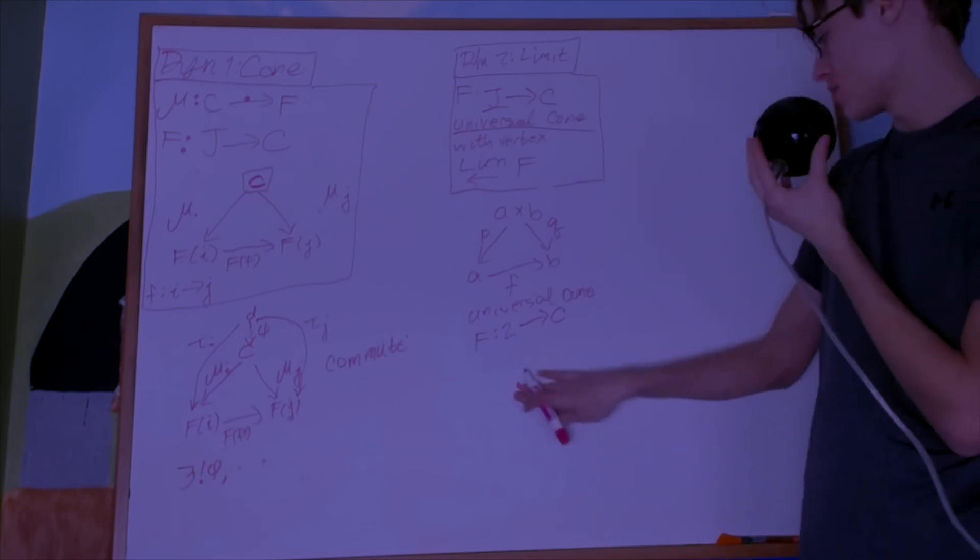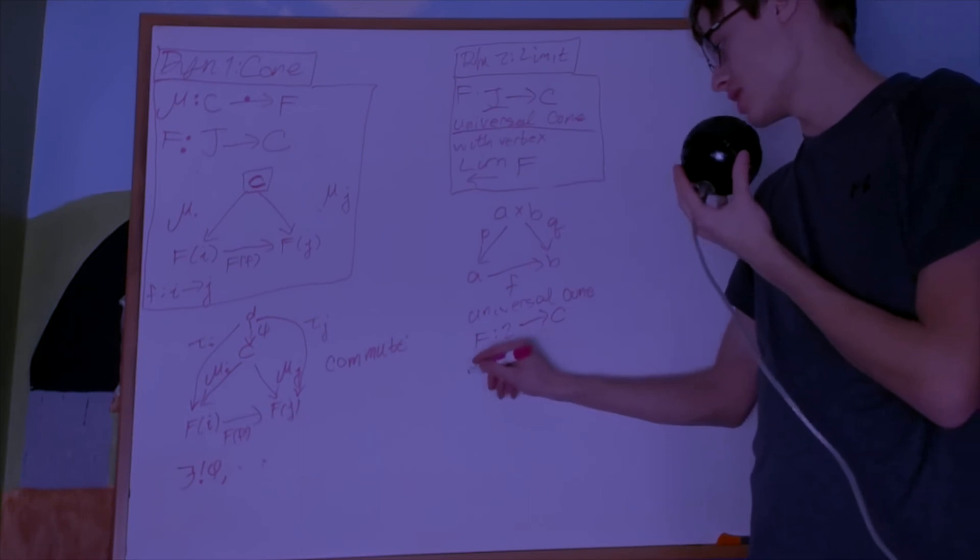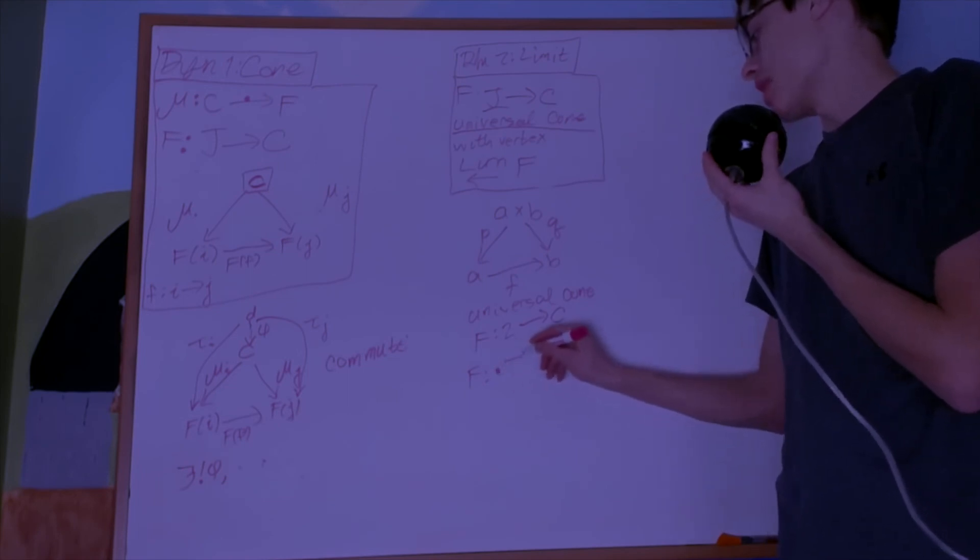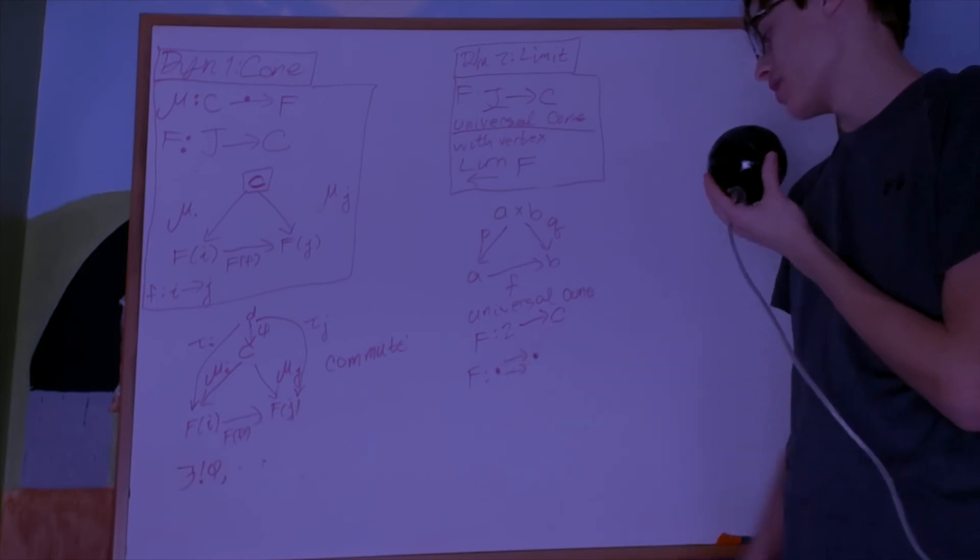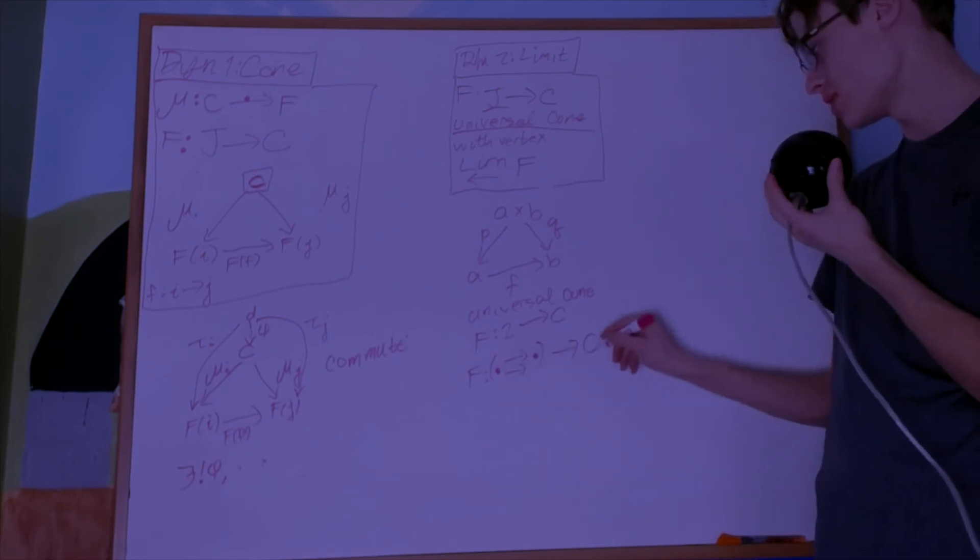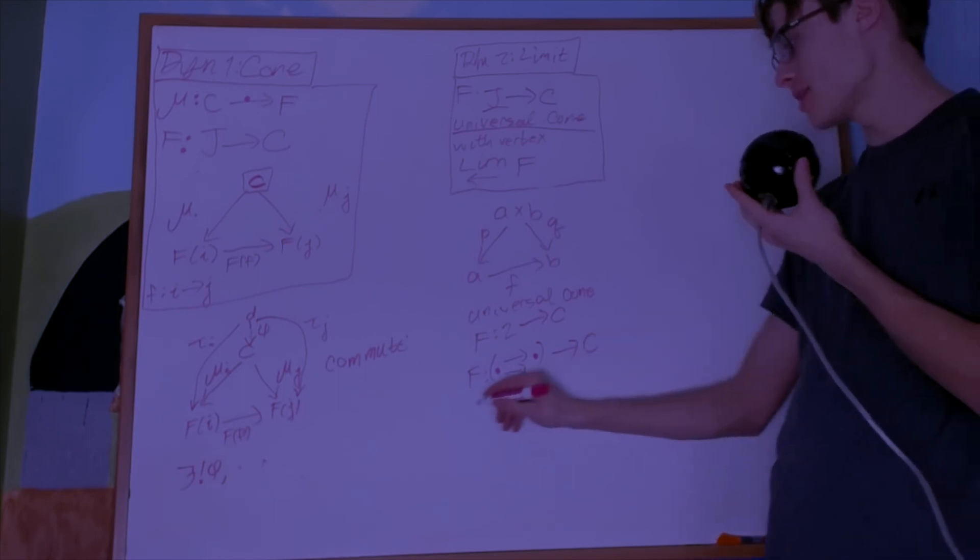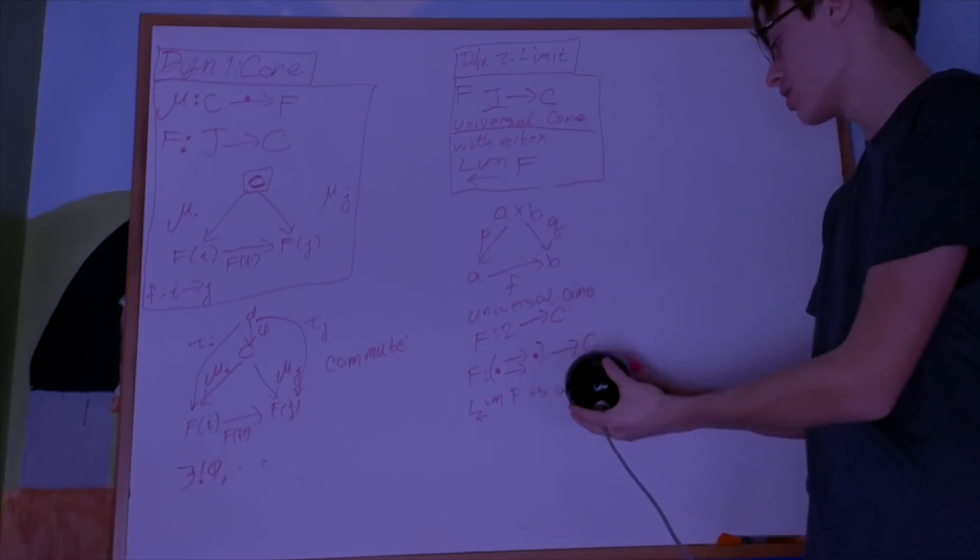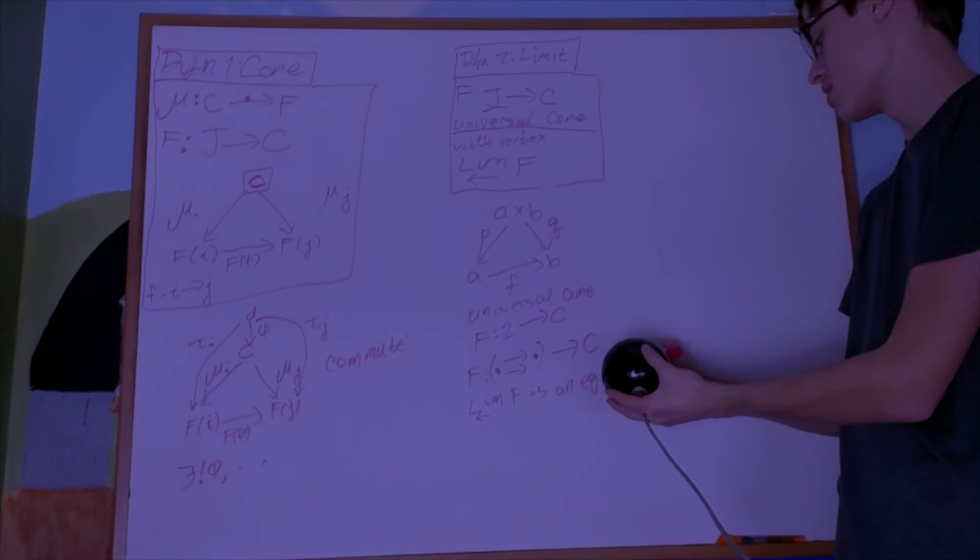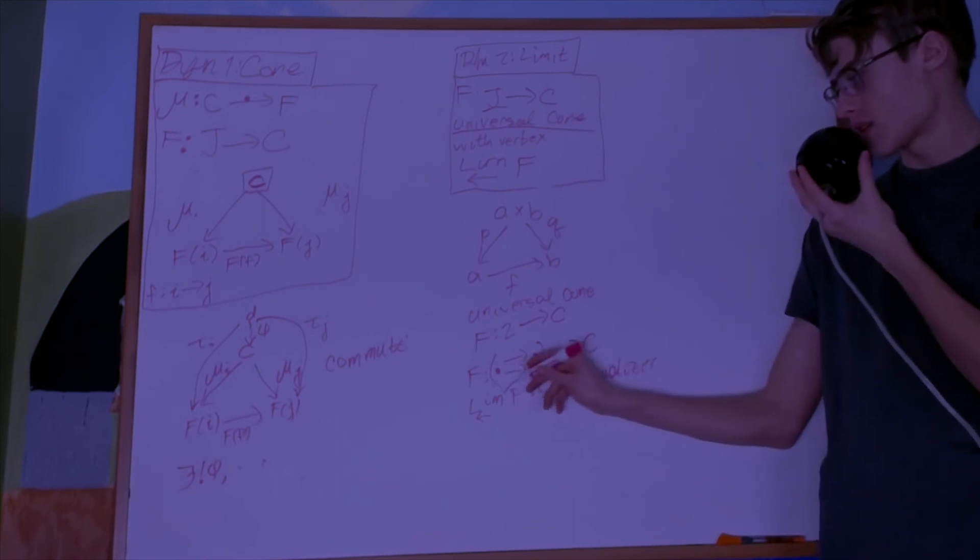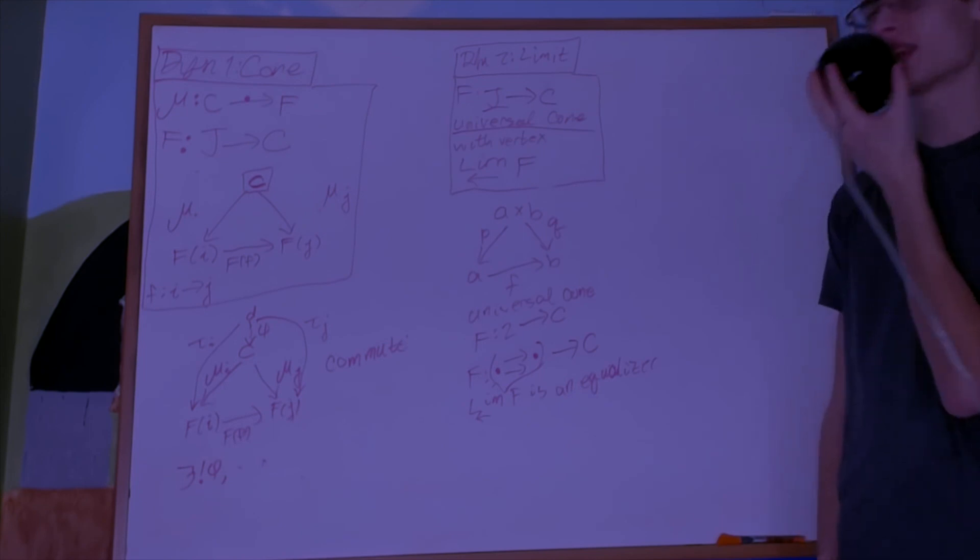All right, now an equalizer is a limit of the double arrow category. So if I have the double arrow category, which is exactly what it looks like, I'll put it in parentheses, and I send it into a category, a limit of this is an equalizer. So a limit where the J is that specific category is called the equalizer.